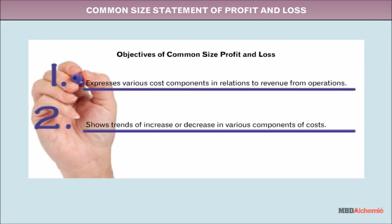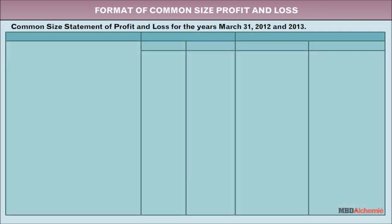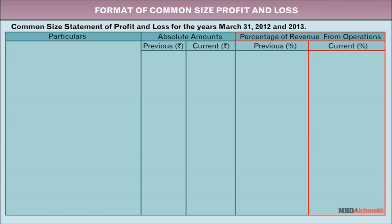It also shows the trend of increase or decrease in various components of costs. The format of common size profit and loss has five columns: the first displays particulars, the second displays the amount of the previous year, the third displays the amount of the current year, the fourth displays the percentage of revenue from operations of the previous year, and the fifth displays the percentage of revenue from operations of the current year.